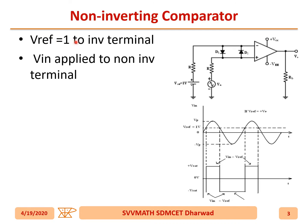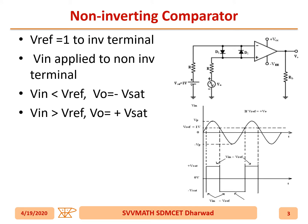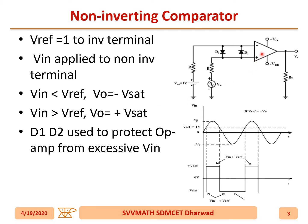V_reference is given as one volt to the inverting terminal of the operational amplifier. V_in is applied to the non-inverting terminal. Whenever V_in is less than V_reference, the output is minus V_saturation. When V_in is greater than V_reference, the output is plus V_saturation. D1 and D2 are used to protect the operational amplifier from excessive V_in.